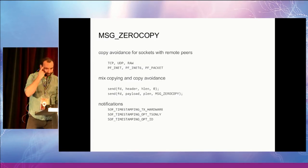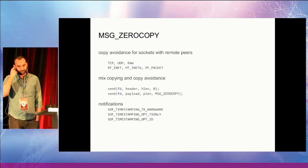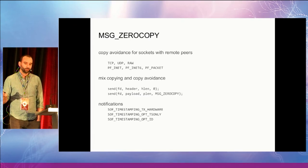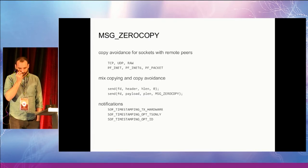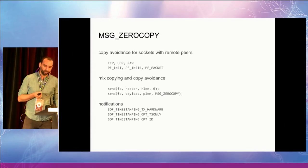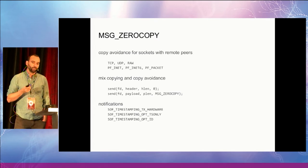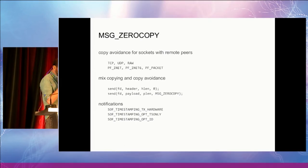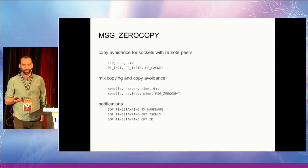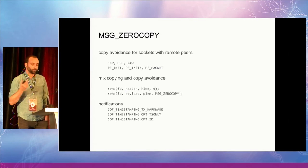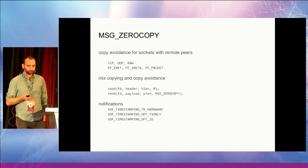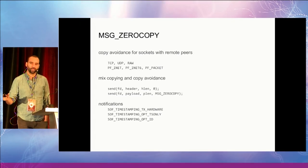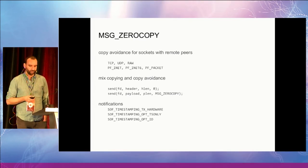This is where the new MSG_ZEROCOPY interface comes in. It is basically just a flag, implemented for common sockets — TCP, UDP, raw, packet sockets — for both INET and INET6. It is implemented as a flag rather than a socket option because it is common to want to combine copying and zero-copy operations: you need to do notification processing on zero-copy requests, and because copy avoidance involves page pinning, it is not free — for very small writes, it is actually more expensive than copying. It's common to want to copy protocol headers and then zero-copy payload data from a user-space page cache.